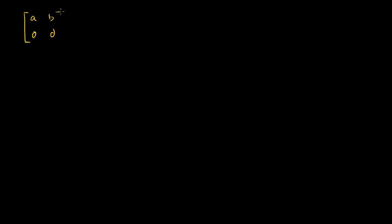Let's say I have a matrix where everything below the main diagonal is 0. Starting with a 2×2 matrix, I have the values A, B, 0, and D — so instead of C, I have a 0 there. What is the determinant of this? The determinant of A equals AD minus B times 0, which is just 0. So it's equal to A times D.